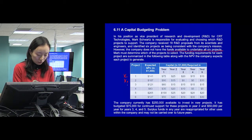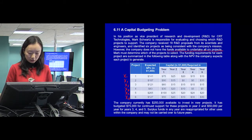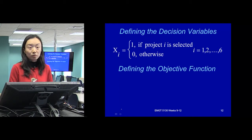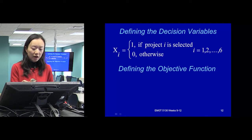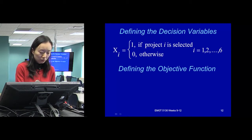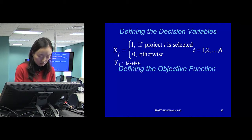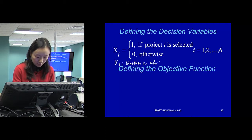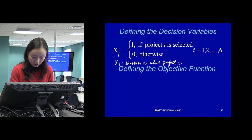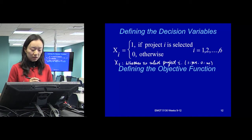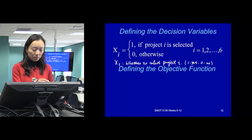So we'll have x1, x2, x3, x4, x5, and x6 representing whether to choose a project or not. For binary variables, we usually define them in this way — the standard way. So xi equals 1 if project i is selected, equal to 0 otherwise. Or alternatively, xi represents whether to select project i: 1 means yes, 0 means no. When you define the decision variables as binaries, either way works.